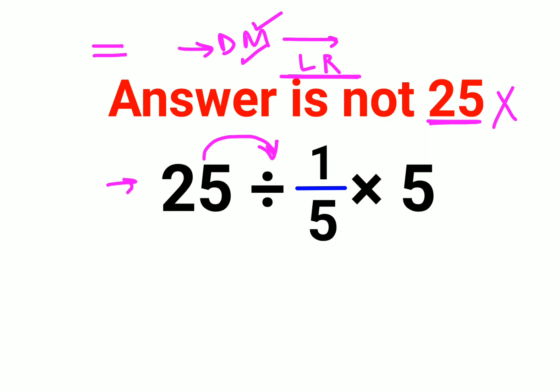So now how do you do division? Division you follow the rule of KCF. In that K stands for keeping the first number as it is, C stands for changing the division sign to multiplication, and F stands for flipping or taking the reciprocal of 1 upon 5 which is 5 into 5.